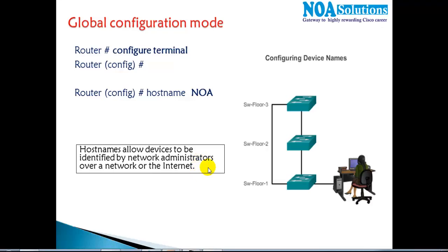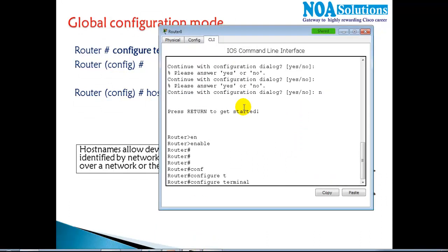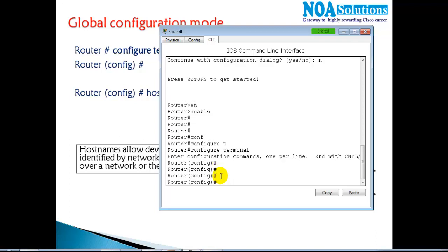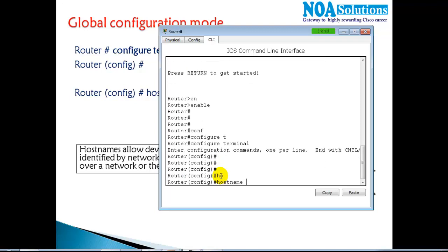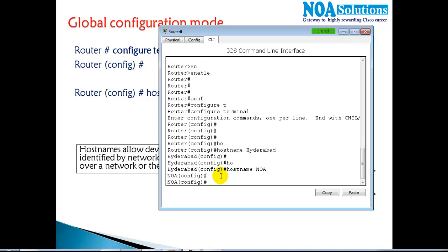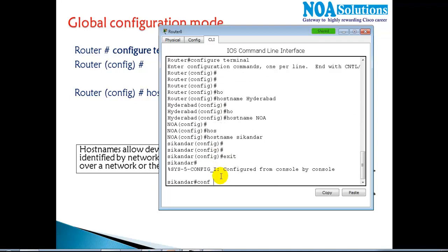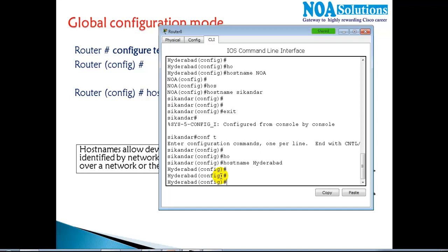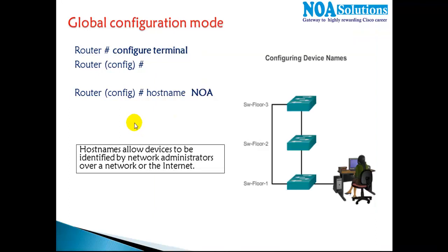Let's verify the configuration on the command line. This command only works in the global configuration mode, which means when you want to make any changes you must be inside global configuration mode. The first change we're starting with is the hostname — I can give the name of a location, the company name, or any name. Once I change the name, you can see the command line prompt updates with the new name.